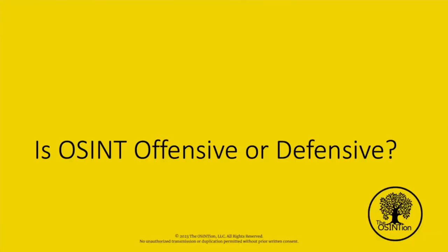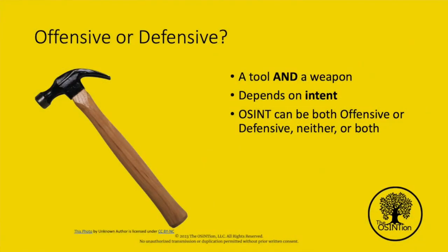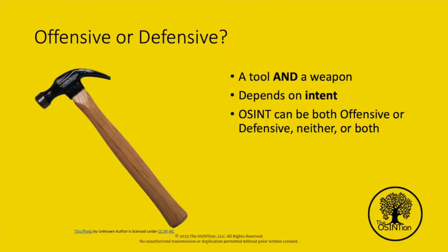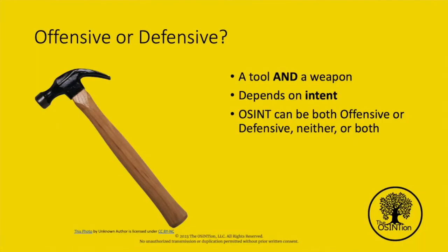I want to pose a question: is OSINT offensive or defensive? Consider this — a hammer. Is a hammer a tool or a weapon? It's both. If I'm trying to put a nail in my wall, it's a tool. If you break into my house in the middle of the night, it's probably going to be used as a weapon. It really depends on intention and the situation. The same applies for OSINT — it can be offensive, defensive, neither, or both.